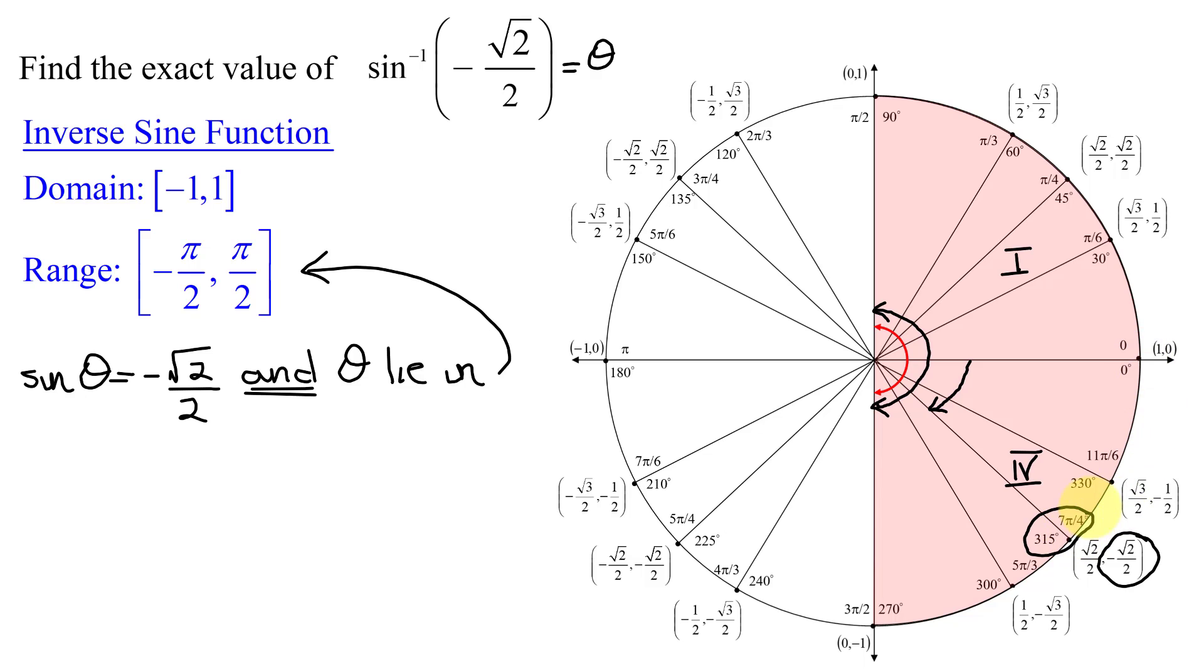If you can look at the unit circle and figure that out in your head, great, but if not, you take theta, you set it equal to 7 pi over 4, and then you just subtract one rotation, that is 2 pi, from it.